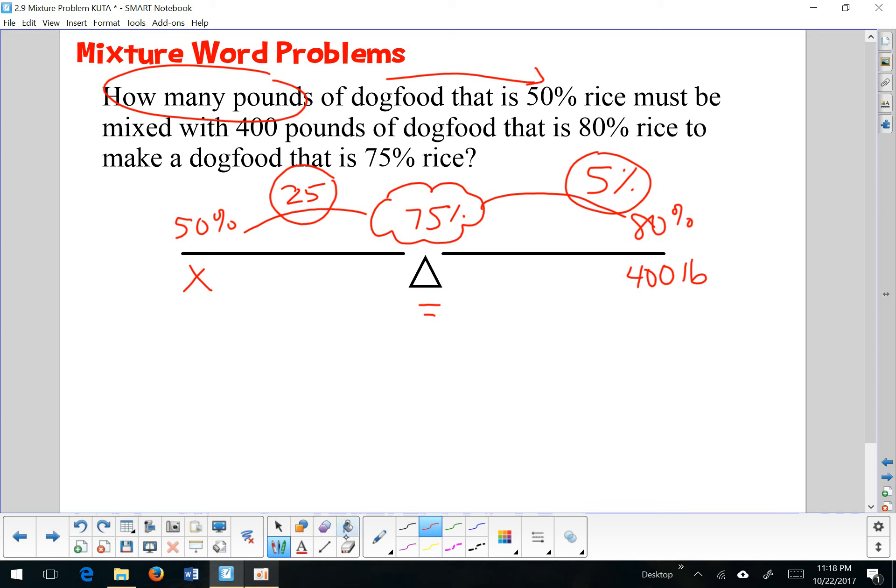So here we go, let's set up our equation. The fulcrum represents the equal sign. So we have our quantity times our distance. These numbers are no longer needed. Our quantity times our distance is equal to our quantity times our distance. And so we're going to get 25x is equal to 2,000. And then, in order to get x by itself, we're going to divide both sides by 25, and we're going to get 80.